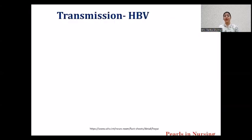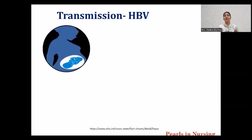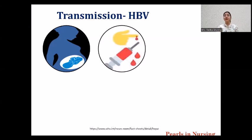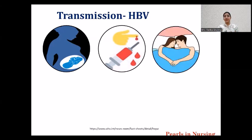Now looking at transmission — the modes of transmission for Hepatitis B. When we talk about transmission broadly, we can classify it as vertical transmission and horizontal transmission. If the mother is infected with the virus and she passes the infection to the newborn baby, this is known as vertical transmission. All other routes are known as horizontal transmission, such as through contaminated needles or needle stick injuries, or through unprotected sexual intercourse if one partner is positive with Hepatitis B virus.